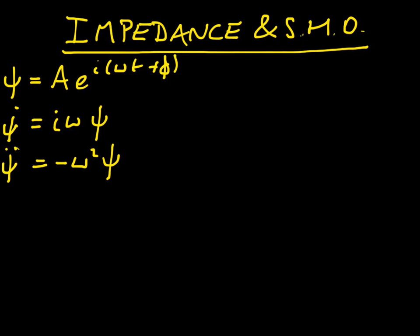Now we can substitute this into the standard driven harmonic oscillator equation. So on the left hand side, we end up with mψ̈, which gives us -mω²ψ.